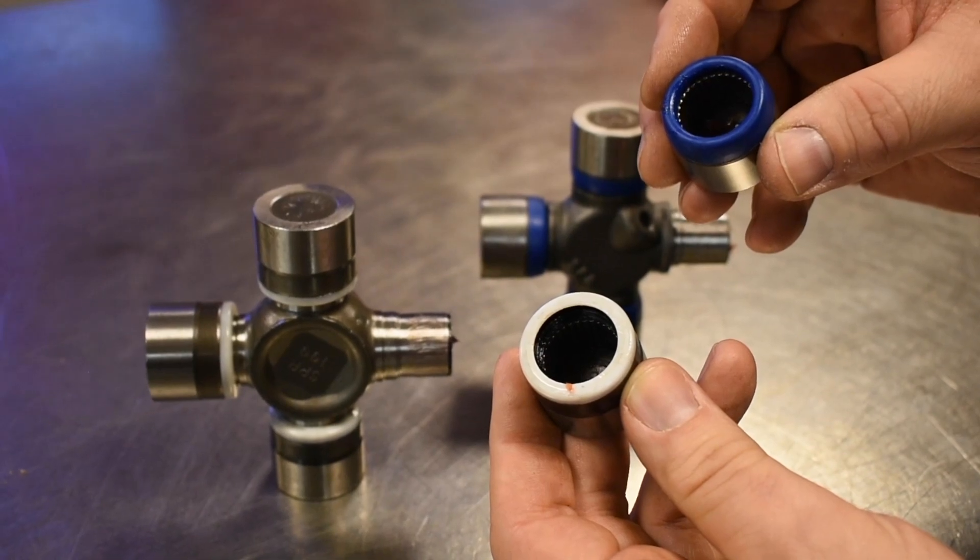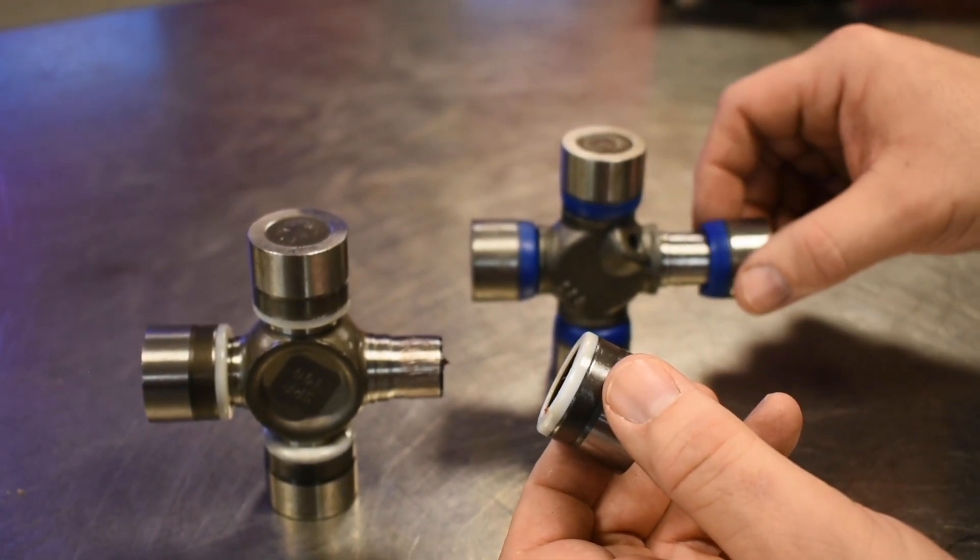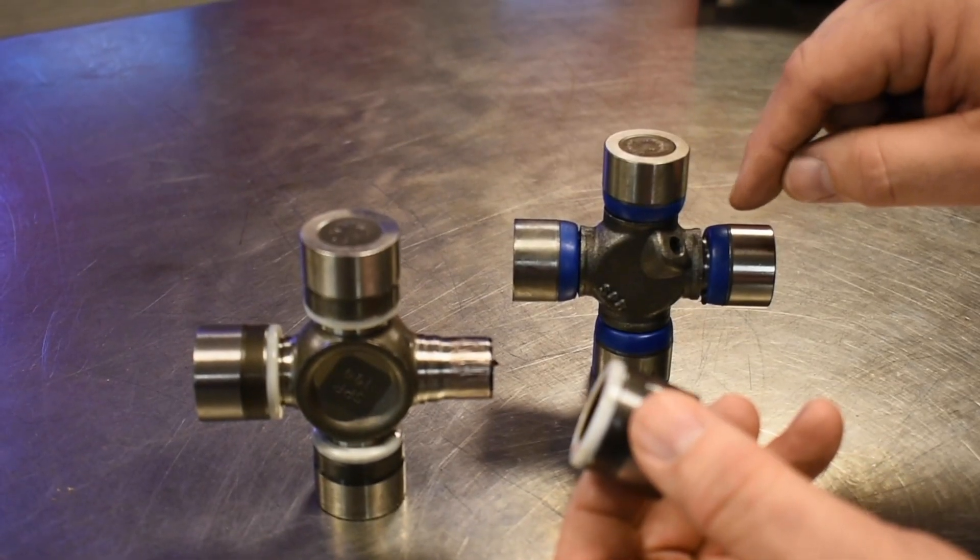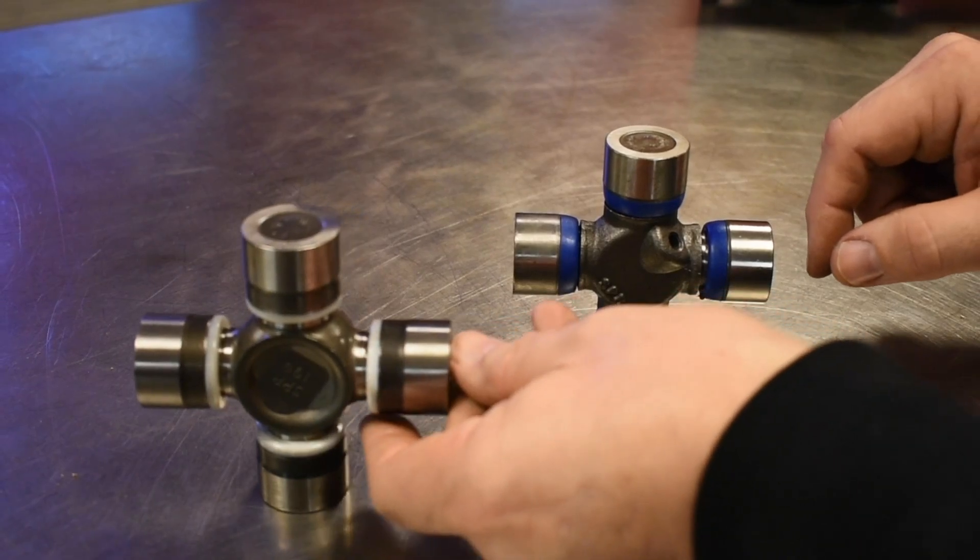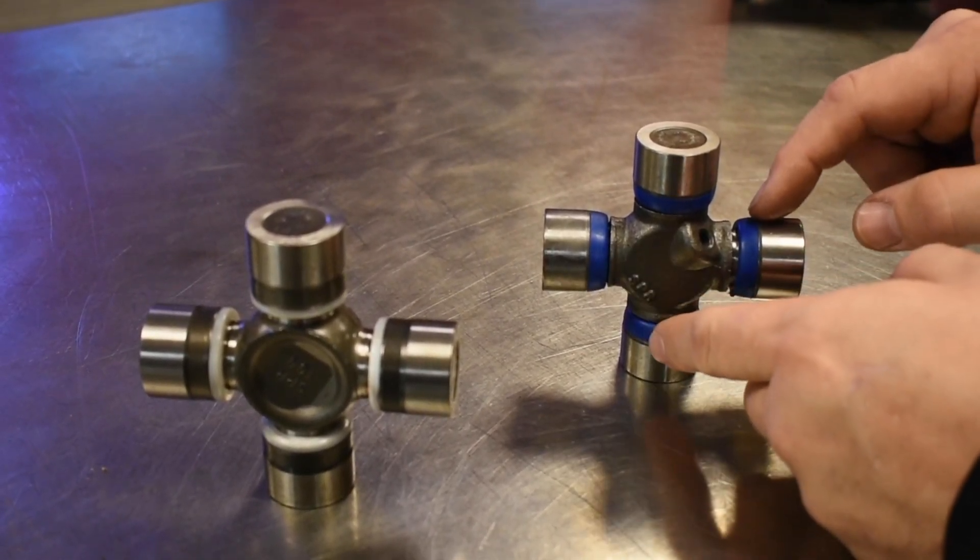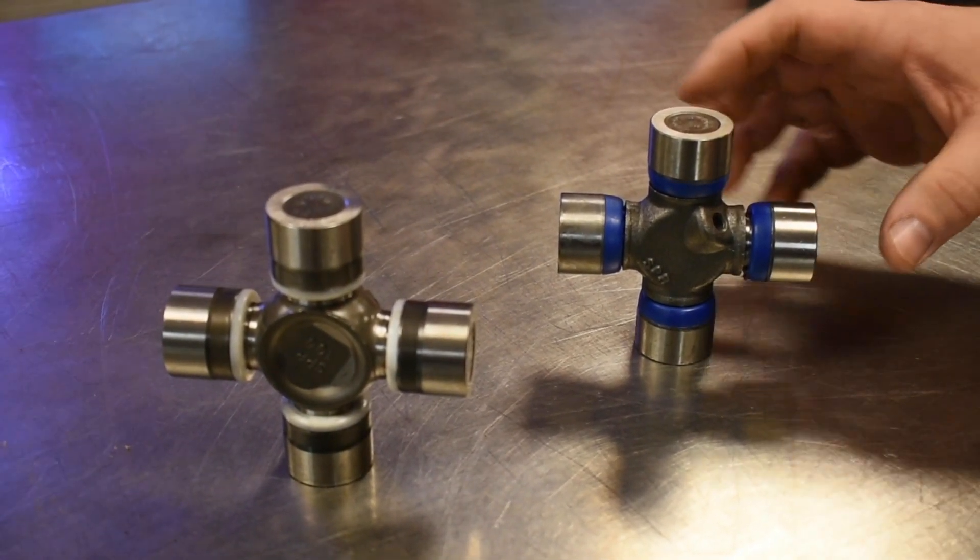And the reason why the difference is because the greasable u-joint is meant to have grease pumped in every 3,000 miles and then it's supposed to be pumped in until you can see grease coming out of all four caps. It literally will purge from those seals. That's just the design of it.